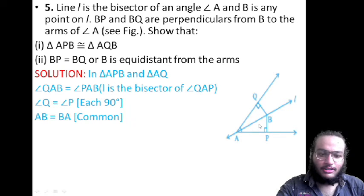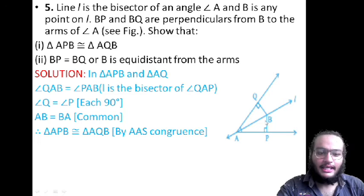Hence, by the AAS congruence, triangle ABQ is congruent to triangle ABP.